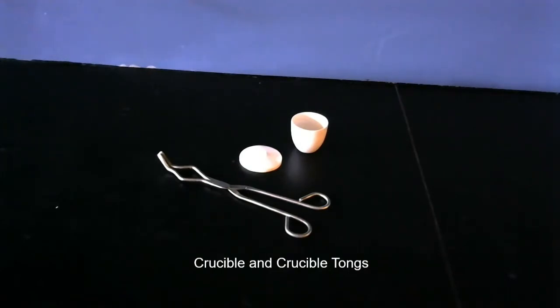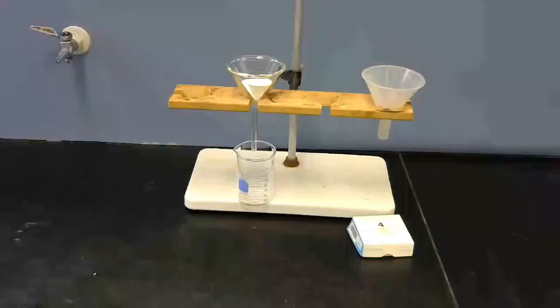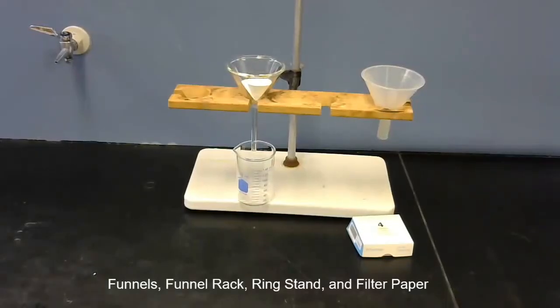Here we have funnels and a funnel rack with a beaker underneath, all mounted to a ring stand. One of the funnels has some filter paper in it, and you can see the box of filter paper there.